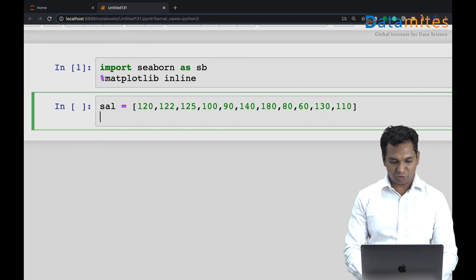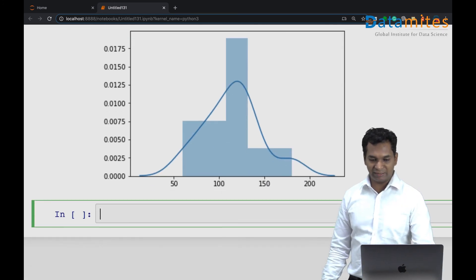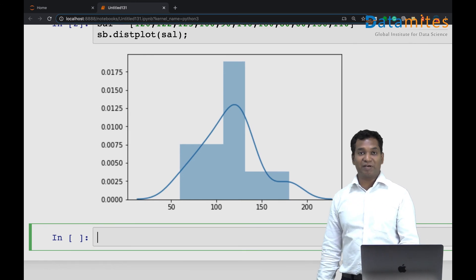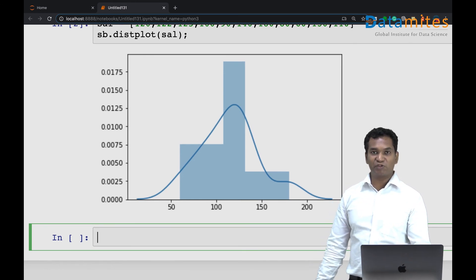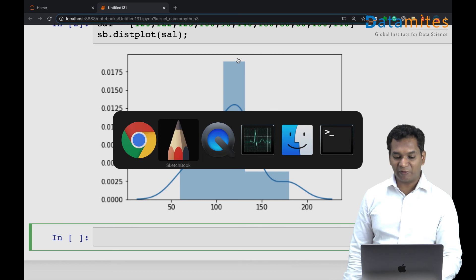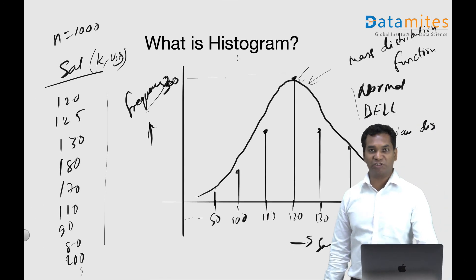If I wish to draw a histogram, I can simply use the histogram function in the Seaborn package. I'm going to pass the salary data. It basically gives you a frequency distribution, and it's a very important statistical plot in statistics.